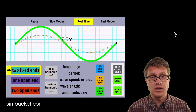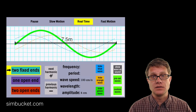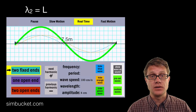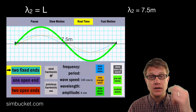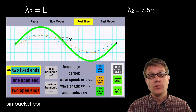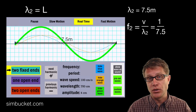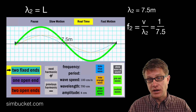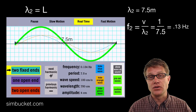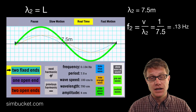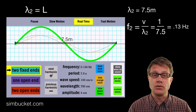Now try one on your own. Figure out what harmonic this is — we've got one wavelength fitting in there, so this is the second harmonic. The wavelength equals the length of the boundary: since the whole length is 7.5 meters, the wavelength is 7.5 meters as well. The velocity through the string is the same at 1 meter per second, so frequency equals 1 divided by 7.5. The wavelength has gotten smaller, so the frequency increases to 0.13 hertz. As we move up in harmonics the wavelength becomes smaller and as a result the frequency goes up.